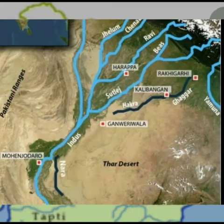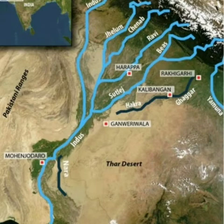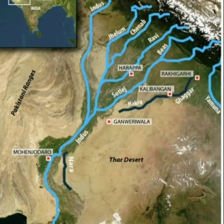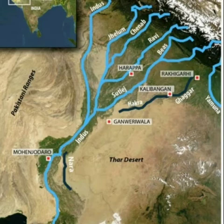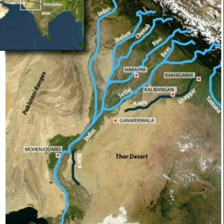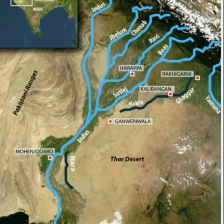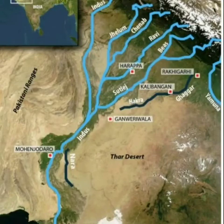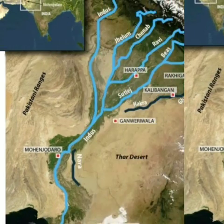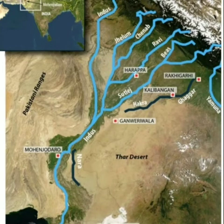Further along, the Jhelum — the river of Kashmir — joins in Pakistan. First Jhelum joins, then Chenab joins Jhelum, followed by Ravi, Beas, and Sutlej. These rivers — Jhelum, Chenab, Ravi, Beas — all first merge together and then at the place called Mithankot, all these rivers join the Indus.